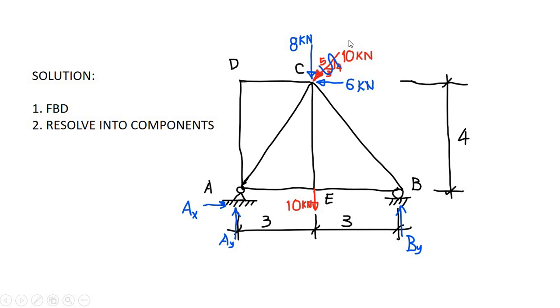Now notice that we also have an inclined load at point C. In order for us to easily solve the problem, we need to resolve this 10 kilonewton force into its X and Y components. So we have 10 times 4 over 5 equals 8 kilonewtons.